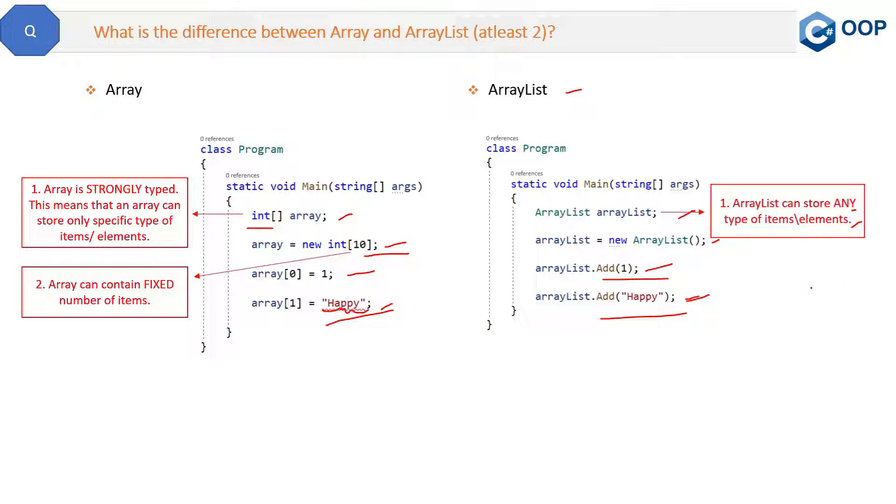But on the other hand, in case of ArrayList, you can store any number of items. So there is no count of items you have to maintain or you have to give anywhere in this ArrayList. So this is the second difference and I hope these two differences are enough and good.